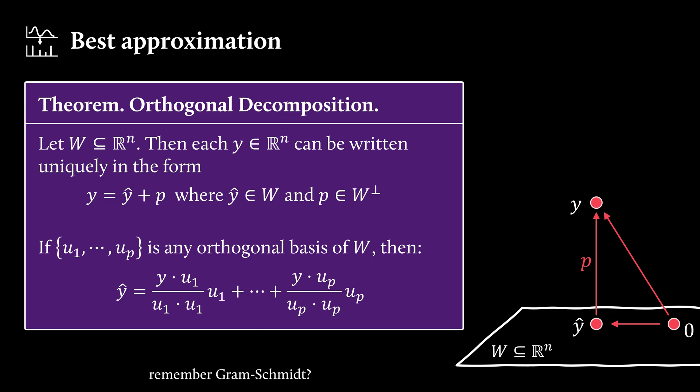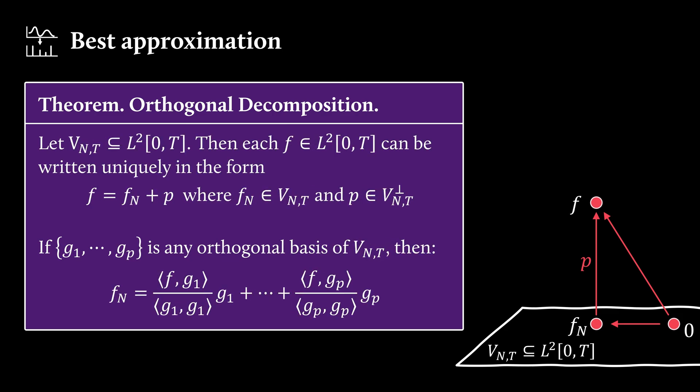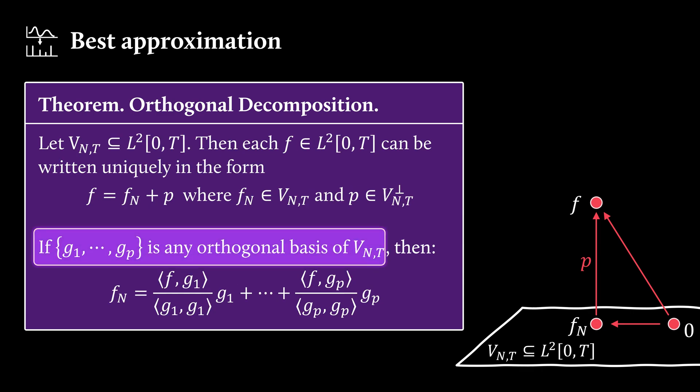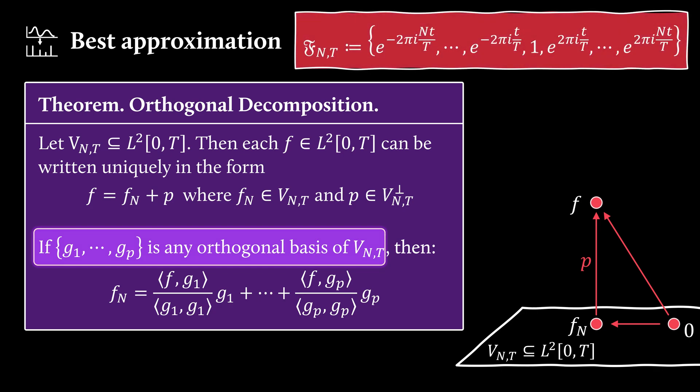Now, as beforehand, this theorem is not only valid with regards to the space Rn, but also if we plug in our function space and consider vₙₜ as a subspace of it. Then we already have an orthogonal basis of that subspace, because we've defined one fₙₜ,